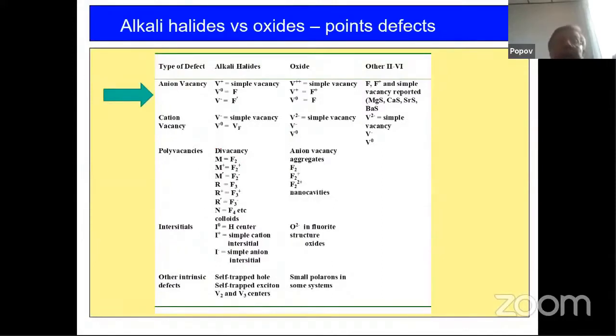If we compare again the situation with oxides with alkali halides, for example, in the case of alkali halides, we know that almost all information about anion vacancies and cation vacancies and interstitials is more or less available and known, and we understand the situation quite well. In the case of oxides, we know only what happens with defects in oxygen sublattice. But we have almost no proper information about interstitials in both sublattices, in oxygen and cation.